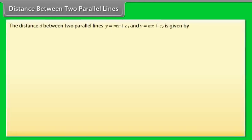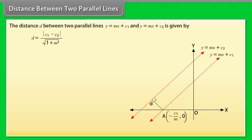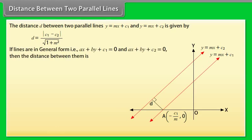Distance between two parallel lines: The distance d between two parallel lines y = mx + c₁ and y = mx + c₂ is given by d = |c₁ − c₂| / √(1 + m²). If the lines are in general form — ax + by + c₁ = 0 and ax + by + c₂ = 0 — then the distance is d = |c₁ − c₂| / √(a² + b²).